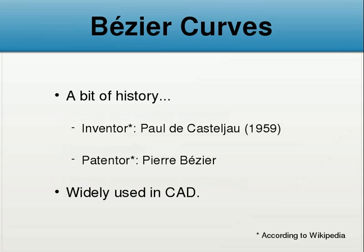Let's start with a bit of history. According to Wikipedia, the inventor of this technique — this is just a technique for generating curves, an easy way to generate curves — was Paul de Casteljau, and he invented it in 1959. But the name comes from the guy that patented the technique, whose name was Pierre Bézier. He died just in 1999. The importance of Bezier Curves is widely recognized because they were the main tool used for many years in the computer-aided design industry field.